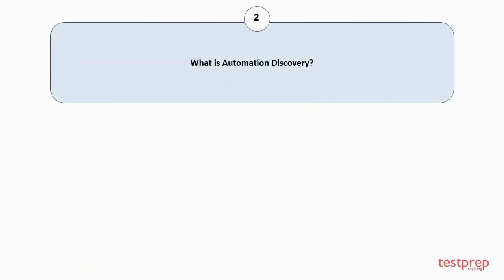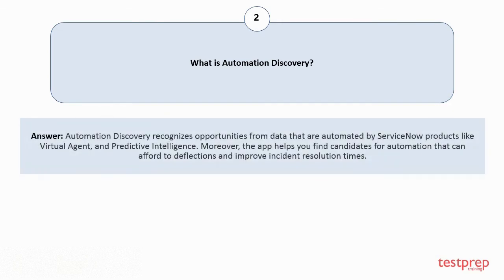Question number two: What is automation discovery? Automation discovery recognizes opportunities from data that are automated by ServiceNow products like Virtual Agent and Predictive Intelligence. Moreover, the app helps you find candidates for automation that can afford deflections and improve incident resolution times.